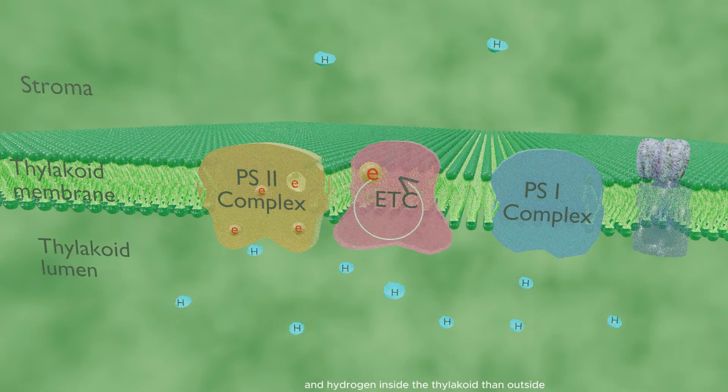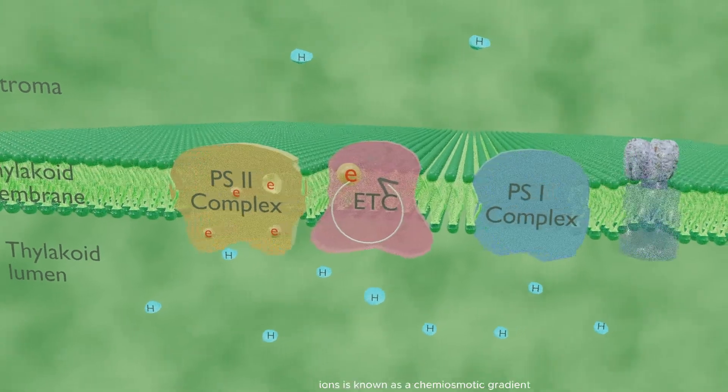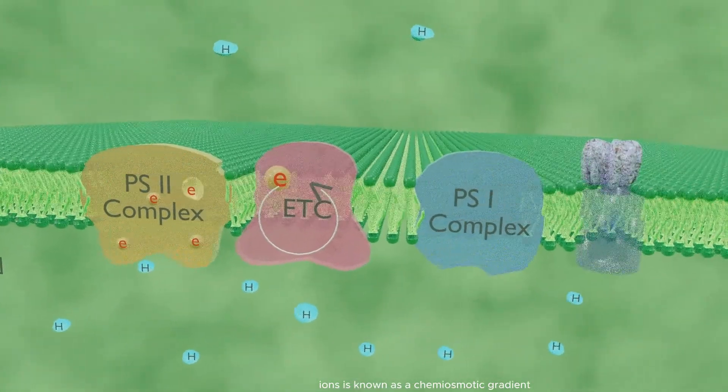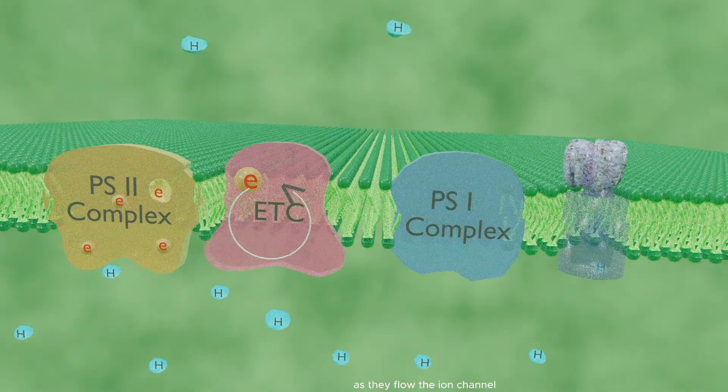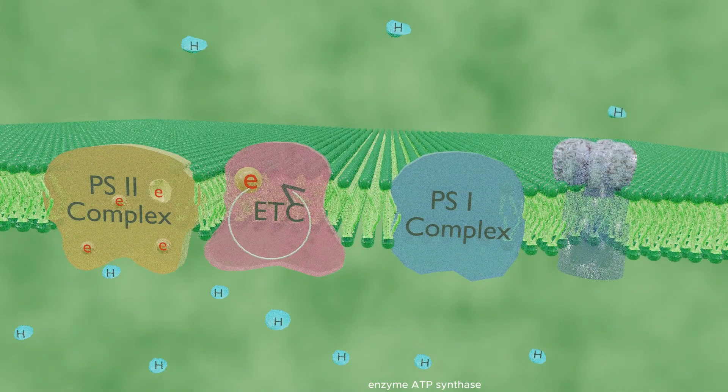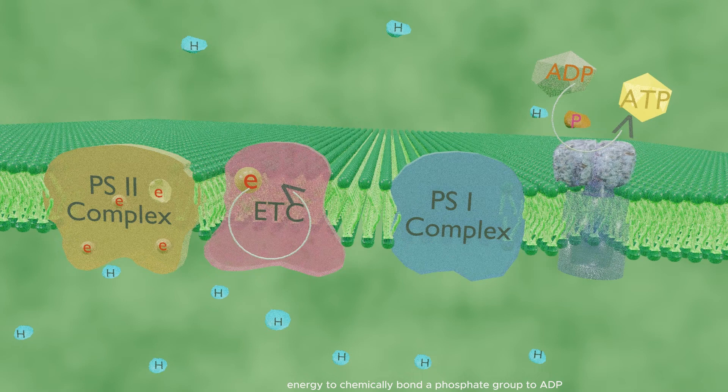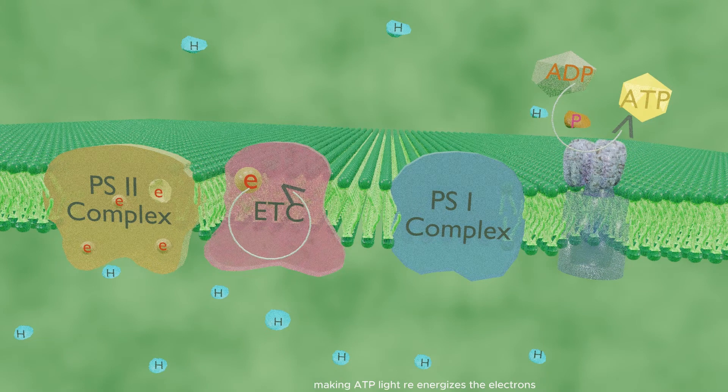inside the thylakoids than outside. The gradient formed by the hydrogen ions is known as a chemiosmotic gradient. As they flow, the ion channel enzyme ATP synthase uses their energy to chemically bond a phosphate group to ADP, making ATP.